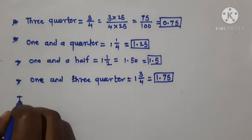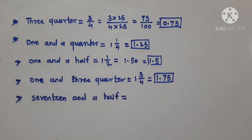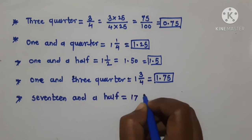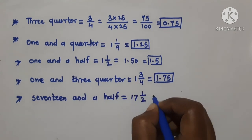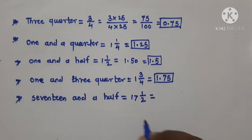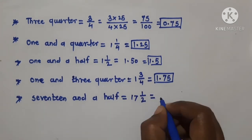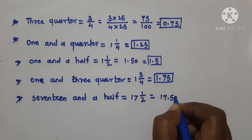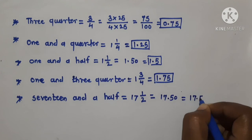Next is 17 and a half. 17 and a half is written as 17 and 1 half. Let us convert this fraction into decimal form. So 17 and a half is equal to 17.5.